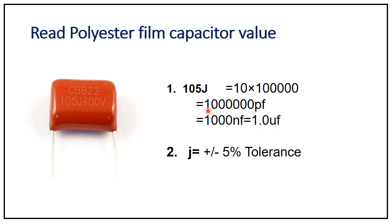The last character J represents tolerance. From the capacitor tolerance code table, J equals ±5%. Therefore, this capacitor has a value of 1 microfarad with a tolerance of ±5%.